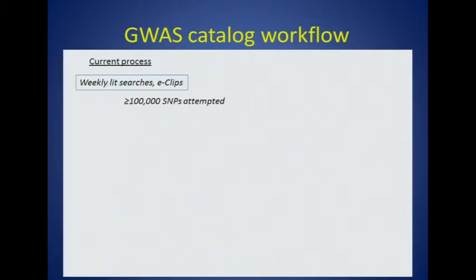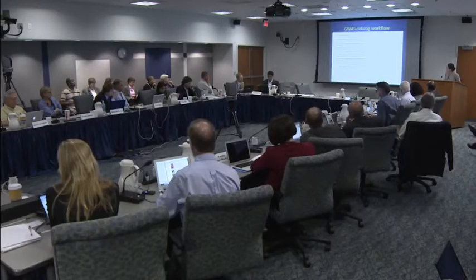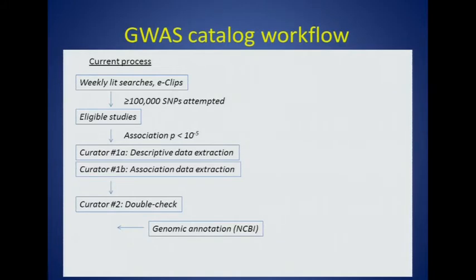To give you a sense of how information flows into and out of the catalog, we have a weekly literature search and we survey the NIH news clipping service for eligible studies. Our curators pour over every single table and every single page of the paper to identify eligible associations. We have first level curation that extracts study level and association level information, and we implement a second level check for both quality and consistency purposes. Before we publish the data, our colleagues at NCBI provide additional genomic annotation and rudimentary QC, and then the data are published to the web.